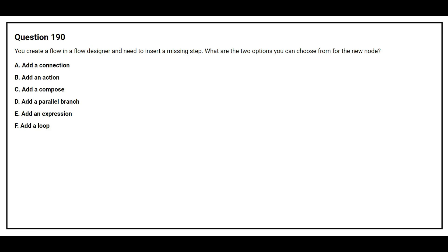Question number 190. You create a flow in a flow designer and need to insert a missing step. What should you add? Option A: Add a connection. Option B: Add an action. Option C: Add a compose. Option D: Add a parallel branch. Option E: Add an expression. Option F: Add a loop.